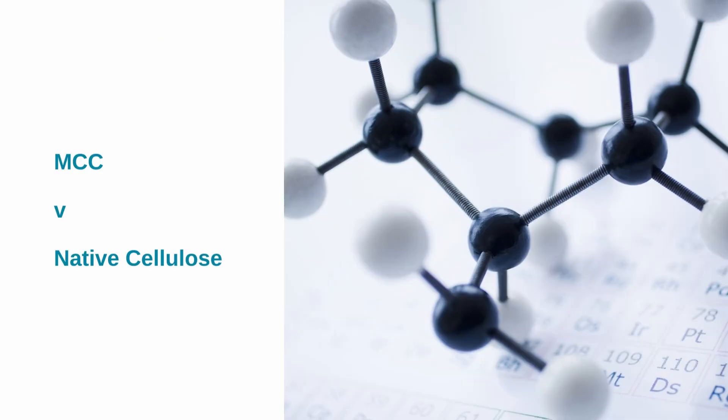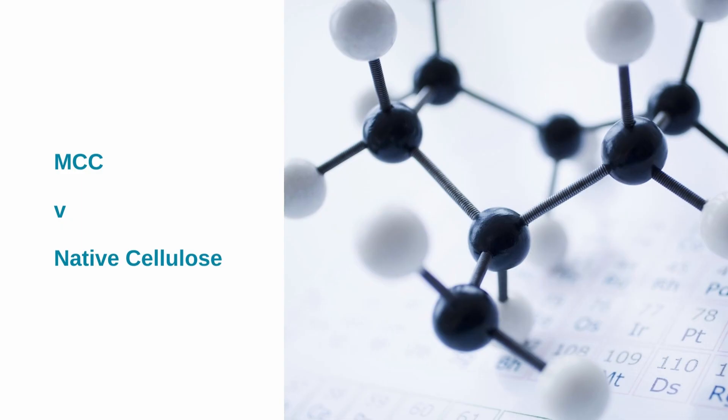What distinguishes MCC from native cellulose? So, cellulose is a linear polysaccharide that's made up of 1-4 linked beta-D glucose molecules. It is present in a wide range of living species, including plants, marine animals, and even some bacteria. It is the major structural component of plant cell walls.